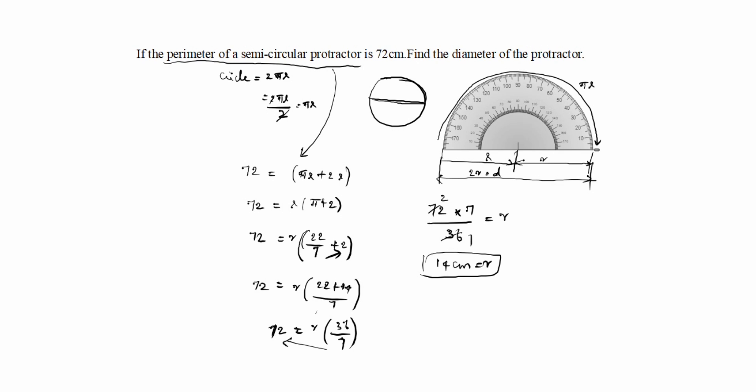But in this question given as diameter. What is diameter? Diameter is equal to 2r. Formula of diameter is equal to 2r. r value is 14. So 2 times 14 is 28 centimeter, d value.